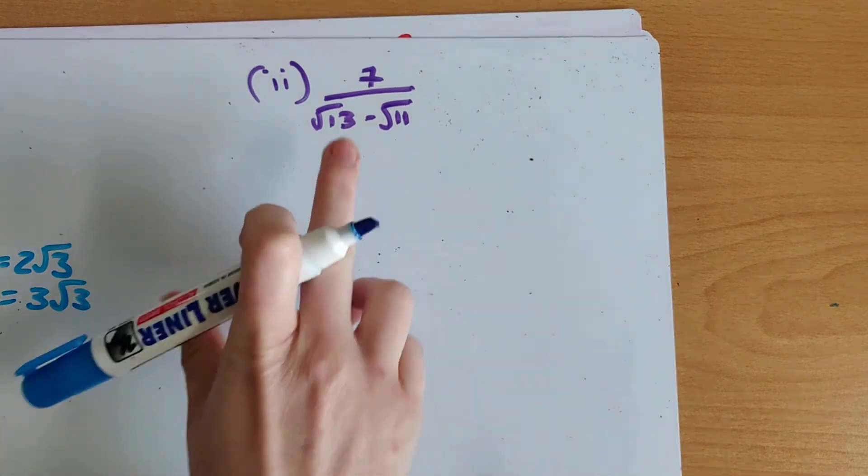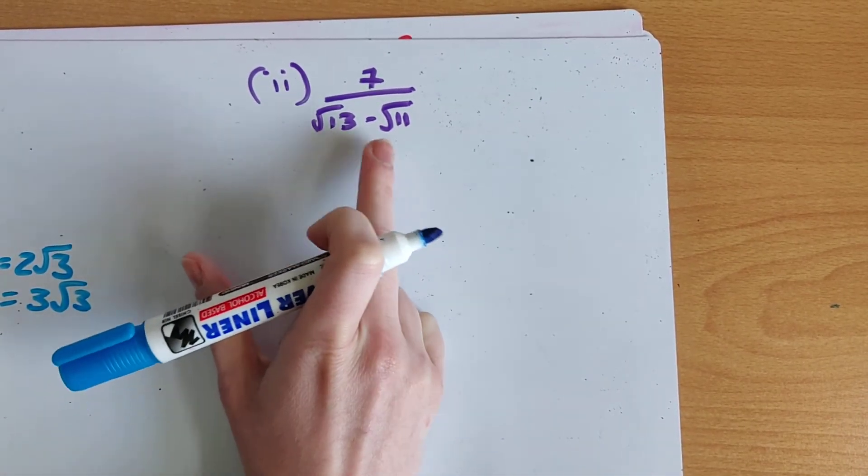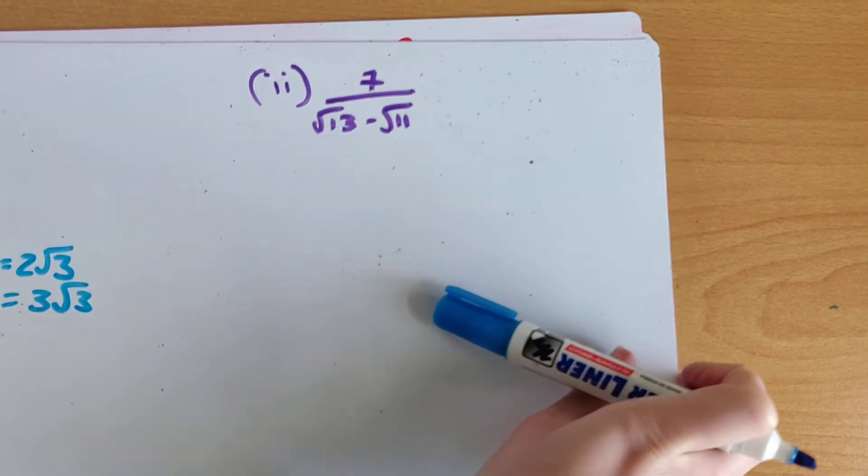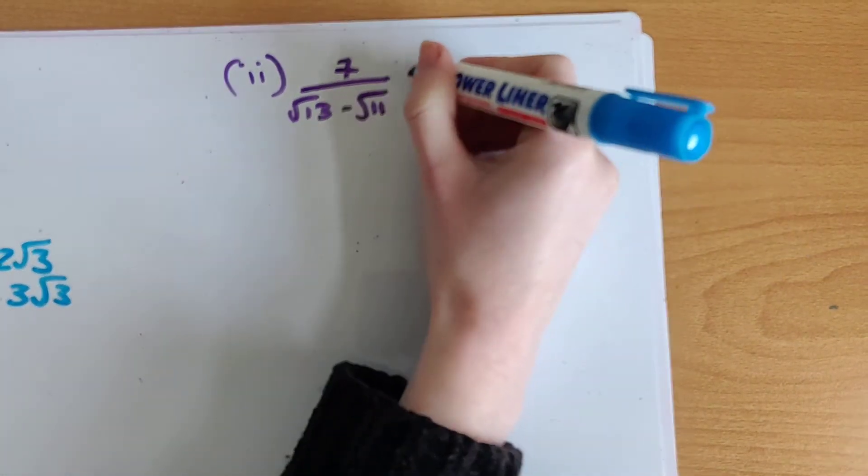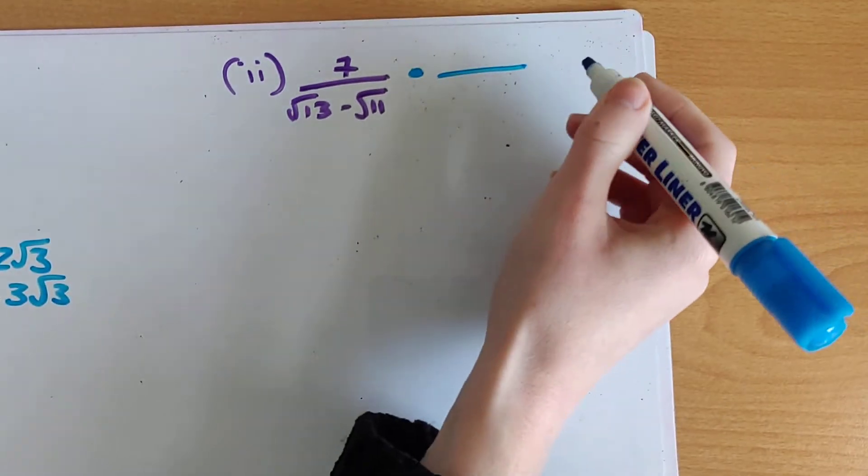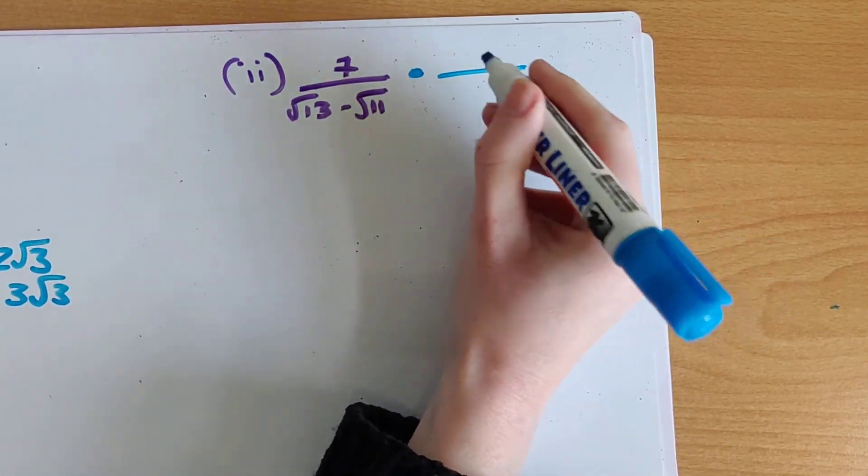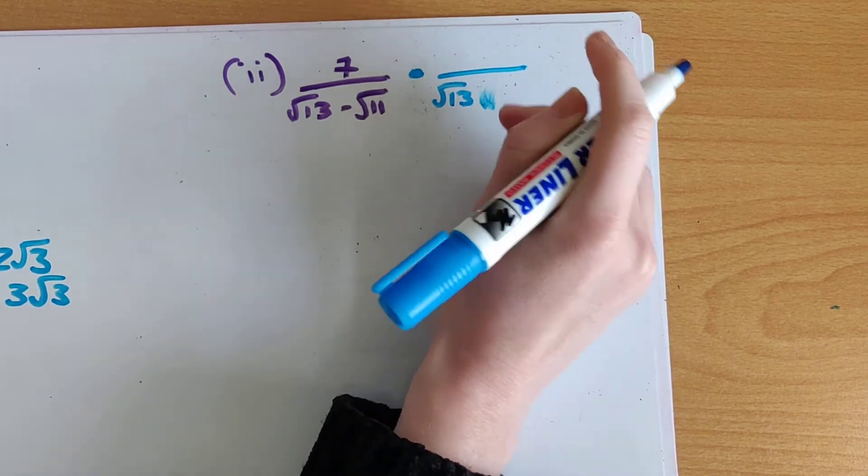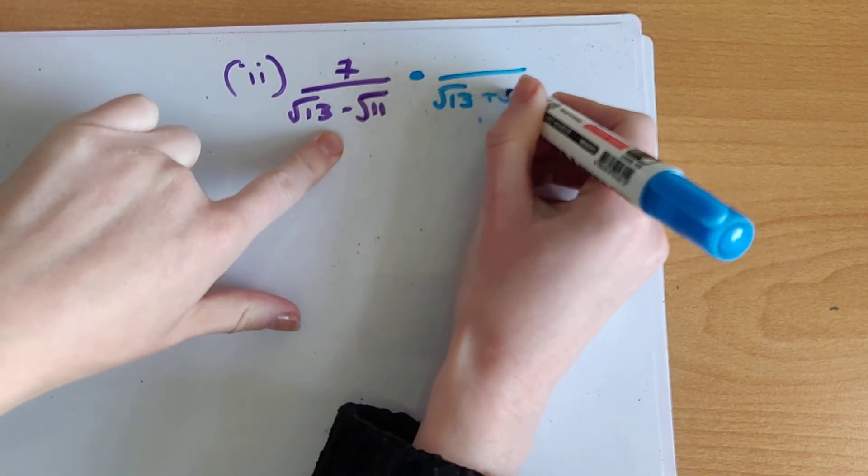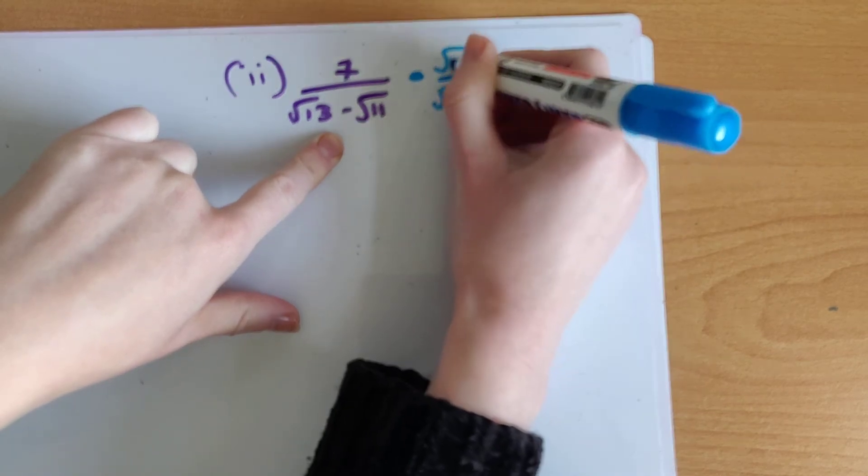In part 2 I have root 13 and root 11 on the bottom. Now both of these are prime numbers which means the surds cannot be simplified. And if they can't be simplified we need to use a method called rationalizing the denominator. Which is where we're going to multiply top and bottom by the inverse of the bottom. Which means if there was a minus here I'm now going to have a plus in between the two surds.